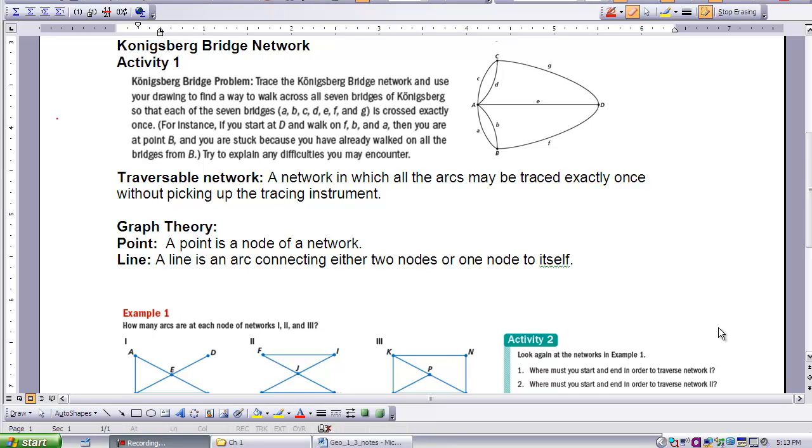When describing this network, I spoke of arcs and I spoke of nodes. In this case, the arcs were the bridges and the nodes were the land masses. When we think about those in terms of graph theory, a point is the node of a network. And a line is an arc connecting either two nodes or one node to itself.